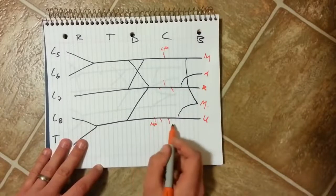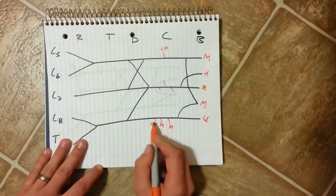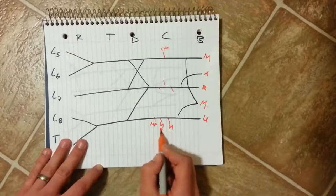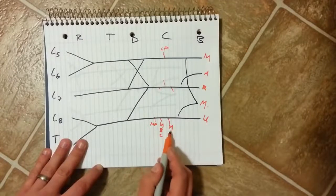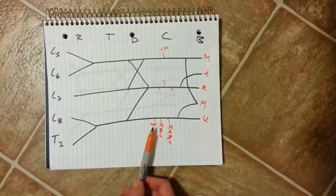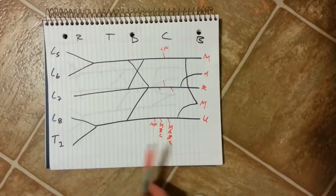And this three down here is easy to memorize because they all start with M. As I said this is the medial pectoral, next one is the medial brachial cutaneous, and the last one is medial ante brachial cutaneous. This is easy to memorize because it goes M plus one letter, M plus two letters, and M plus three letters.